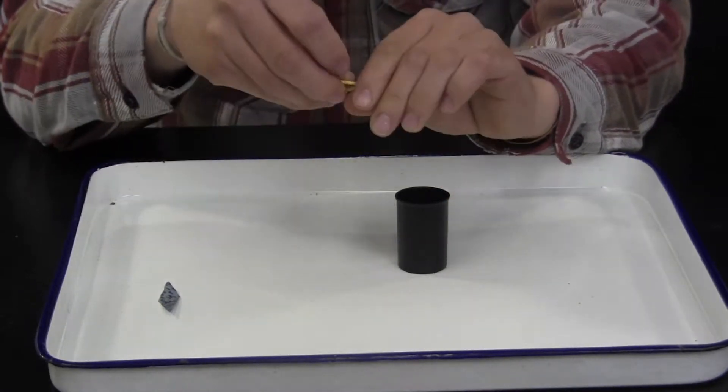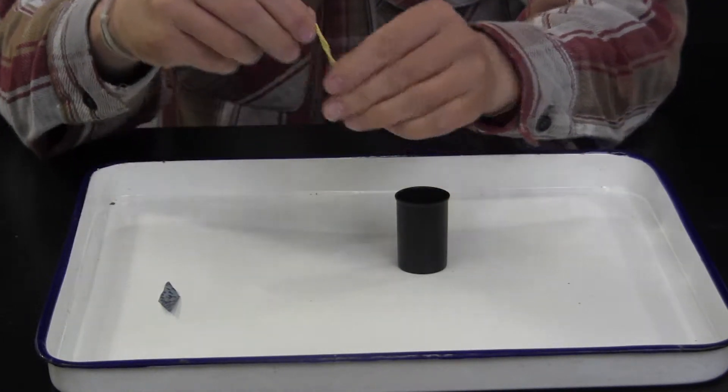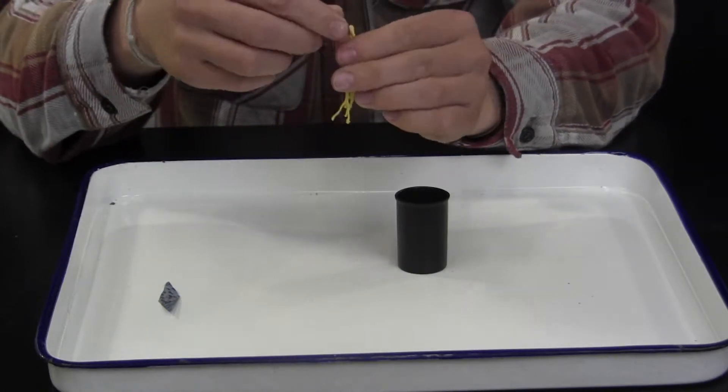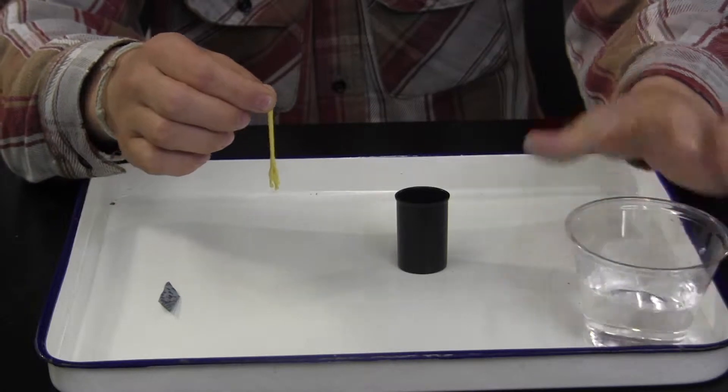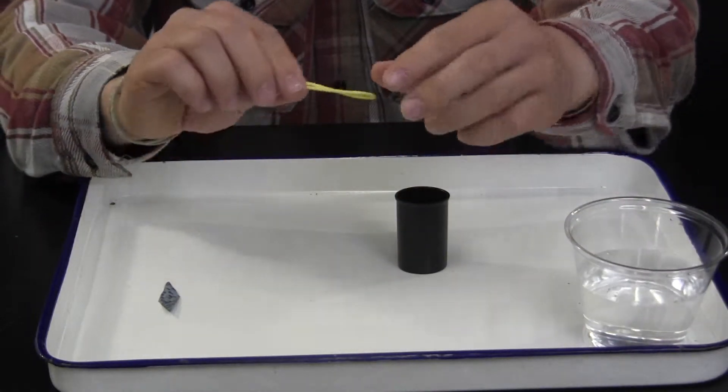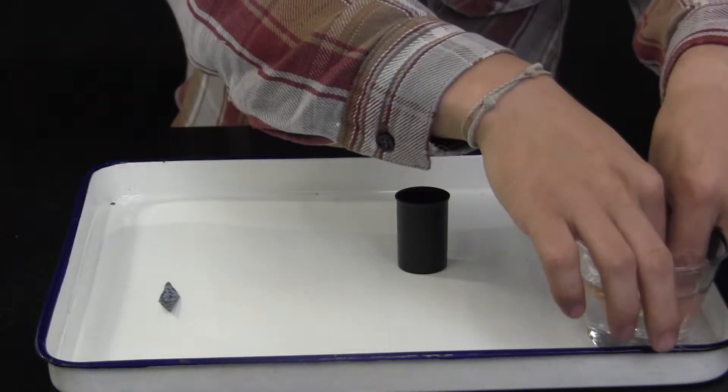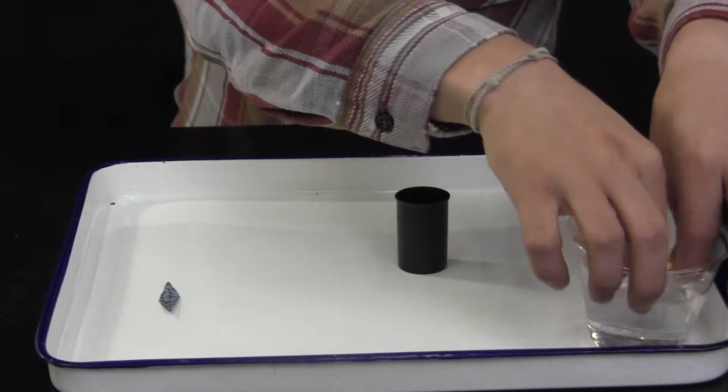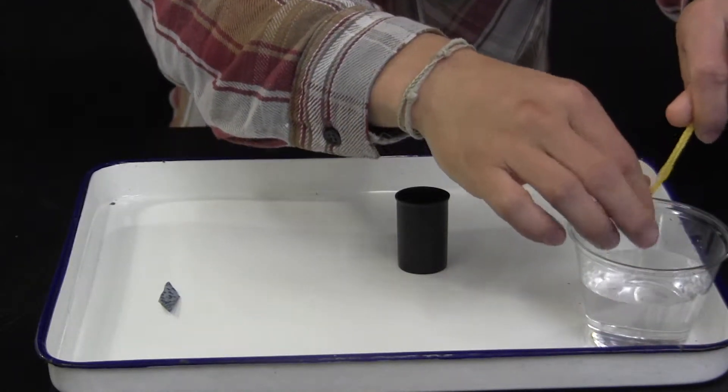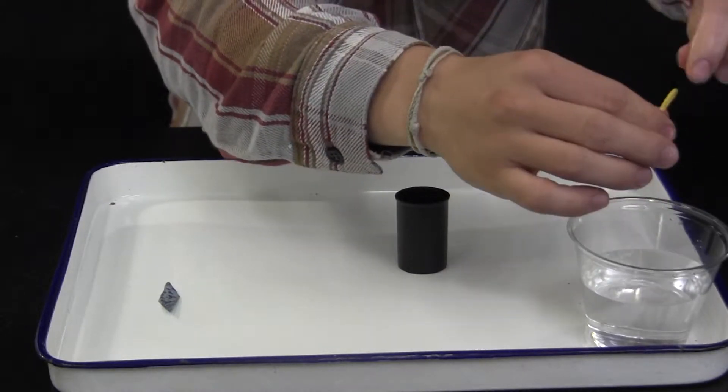Fold the wick in half and soak it in water. Squeeze the wick so that any air trapped in the fibers of the wick is removed and replaced with water.